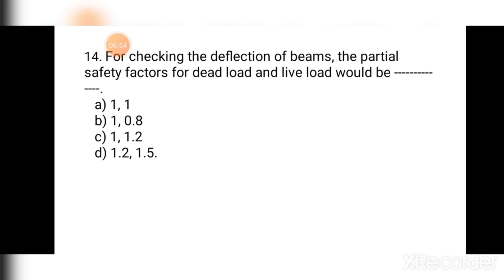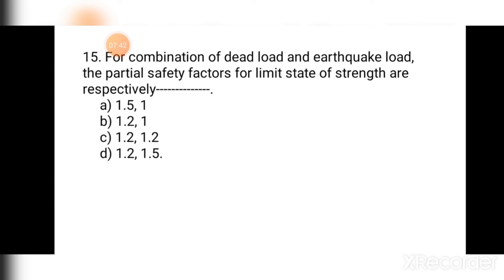Question number fourteen: For checking the deflection of beams, the partial safety factors for dead load and live load would be — (a) 1 and 1, (b) 1.8, (c) 1 and 1.2, (d) 1.2 and 1.5. Deflection is always checked at working loads, so the partial safety factors for both dead load and live load are 1. Hence the correct answer is (a) 1 and 1.